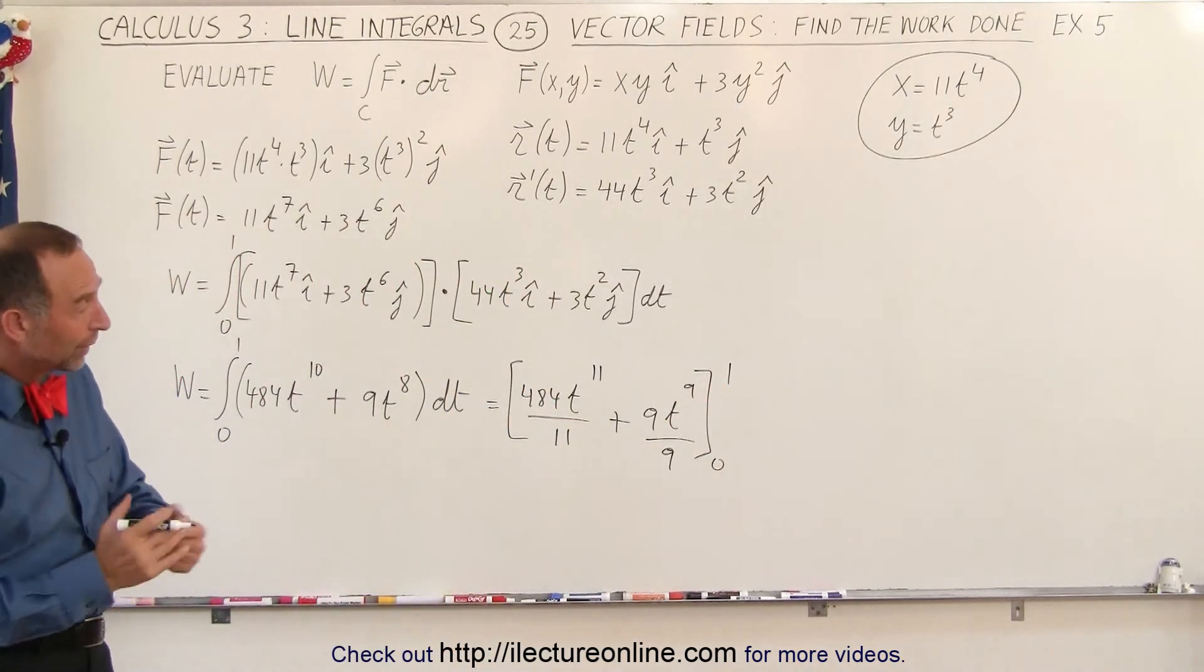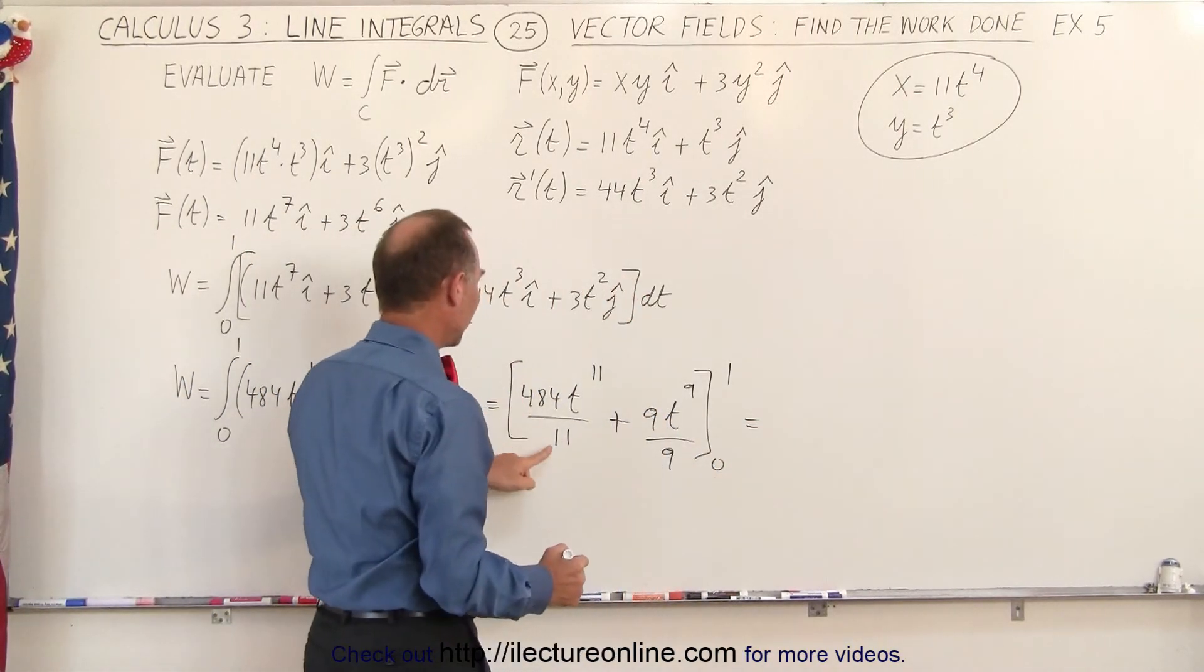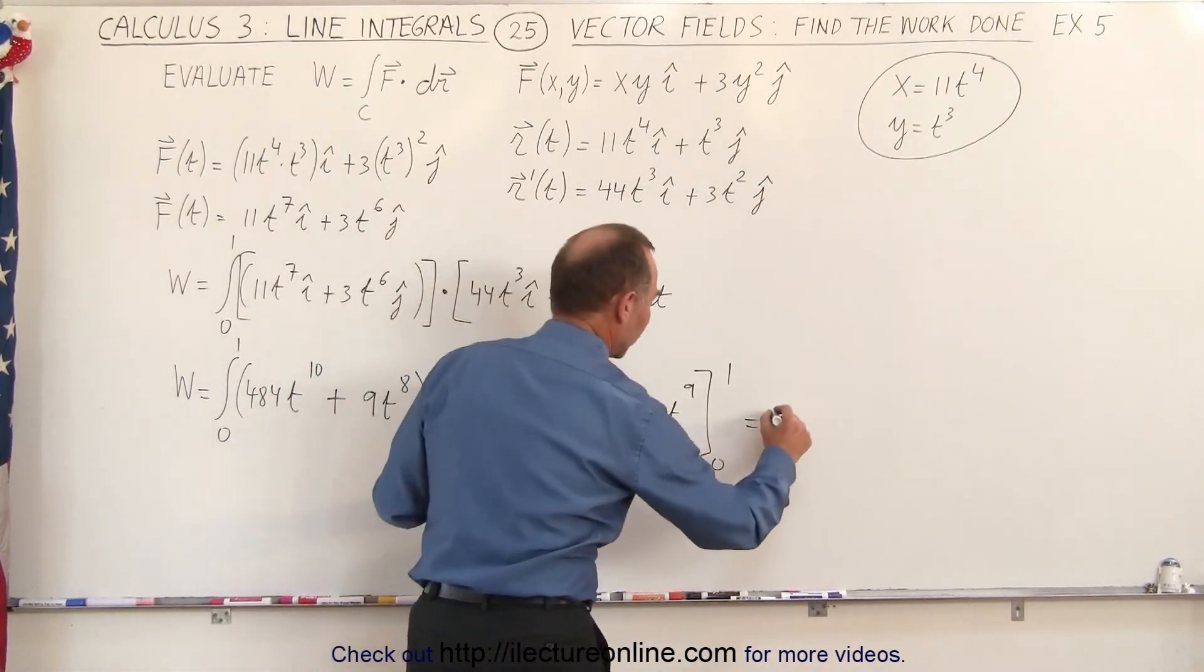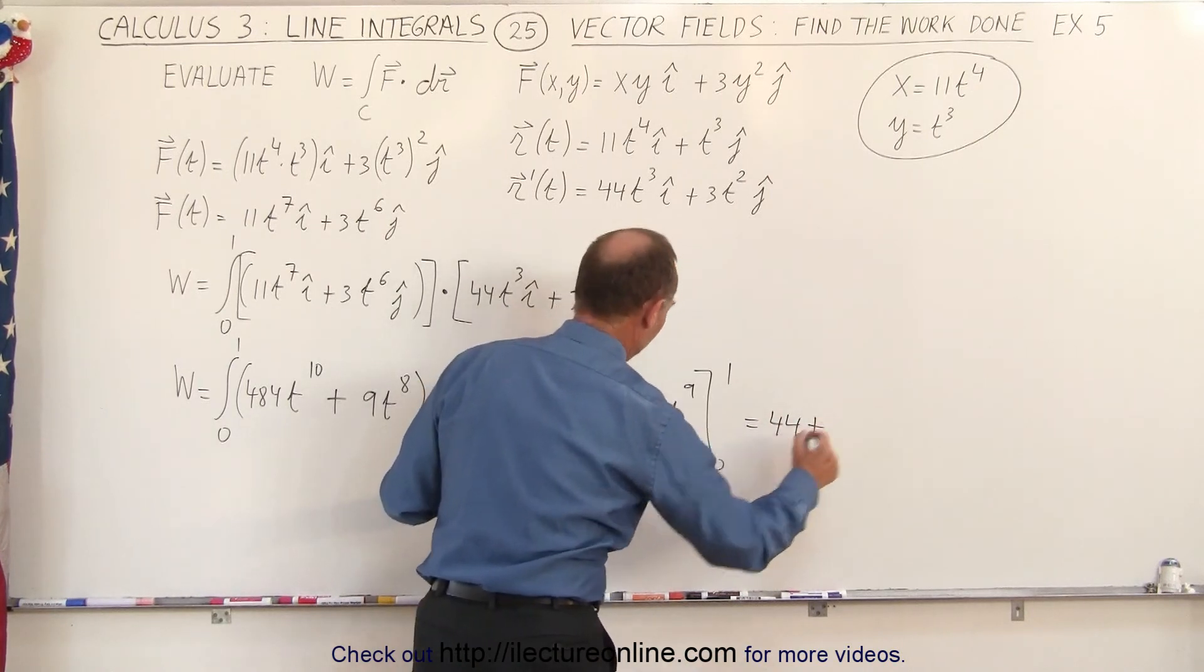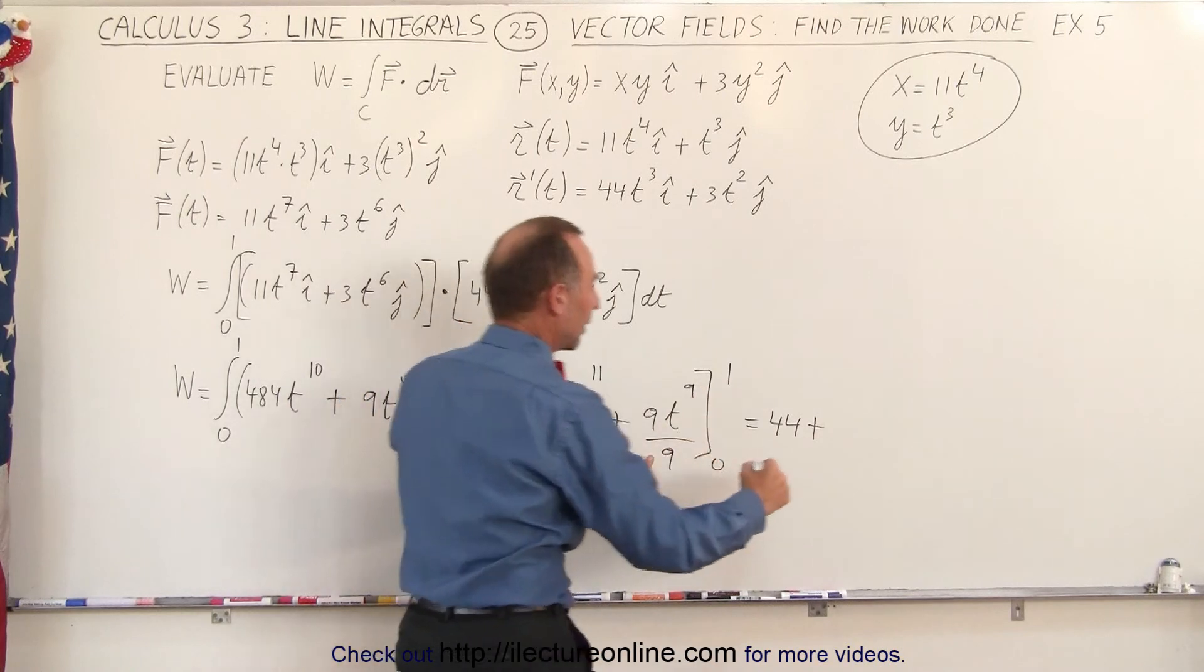When we plug in the lower limit, we get 0. When we plug in the upper limit, we get 44 divided by 11, which is 44, plus, here we get 9 divided by 9, times, of course, 1 to the 9th power, which is 1.